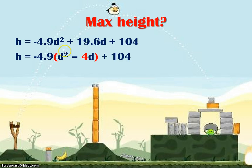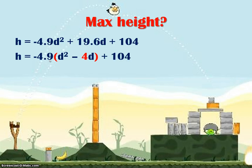I want d squared inside the brackets, so I need to factor out the negative 4.9. But if I factor that negative 4.9 out, it's going to affect the other d value. So you have to take the 19.6 and divide it by negative 4.9 once it's factored out, which leaves negative 4. The 104 doesn't change — it stays at the back.